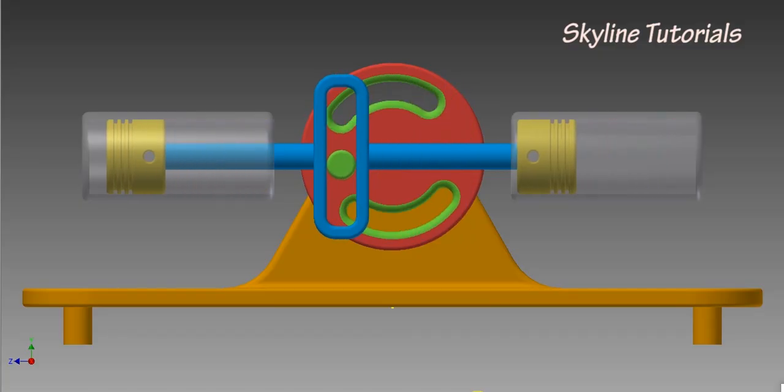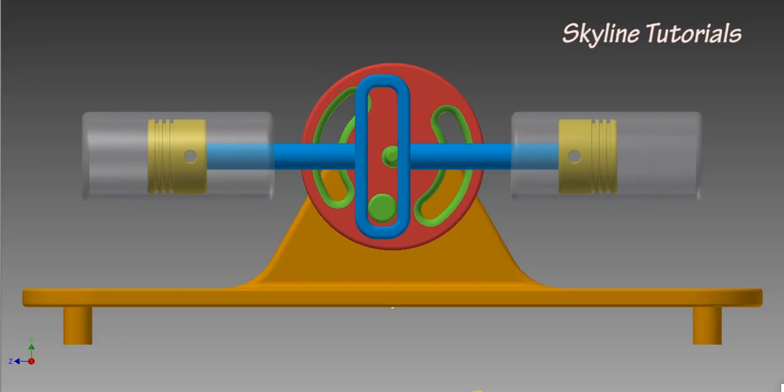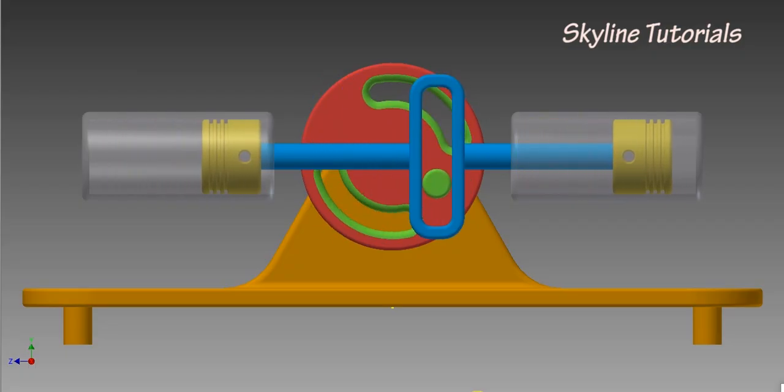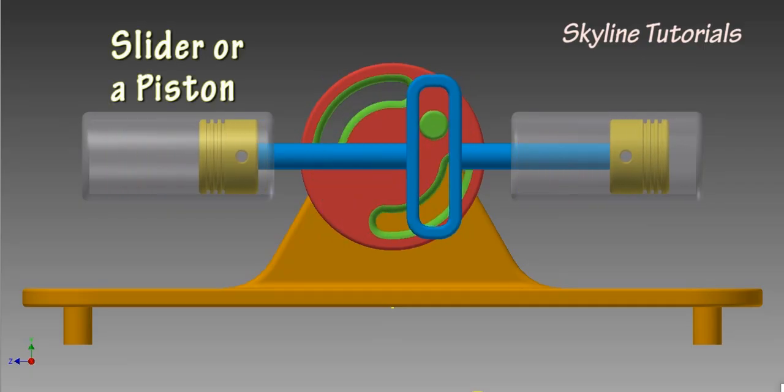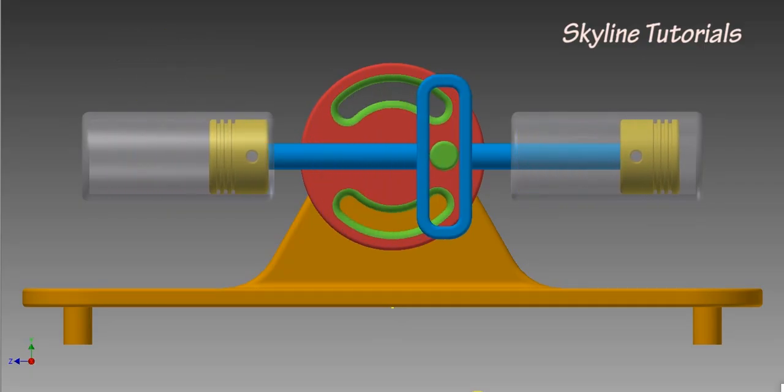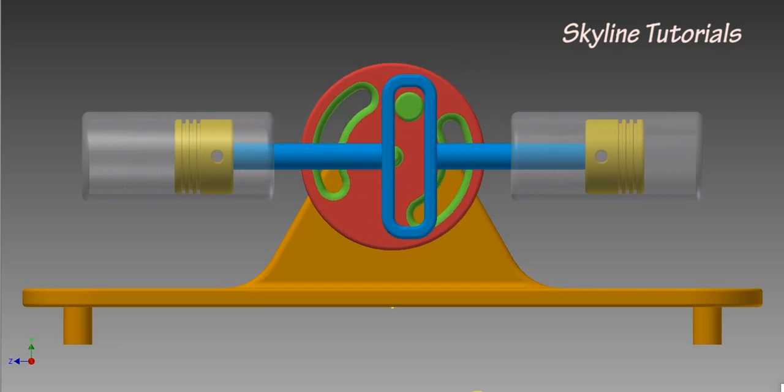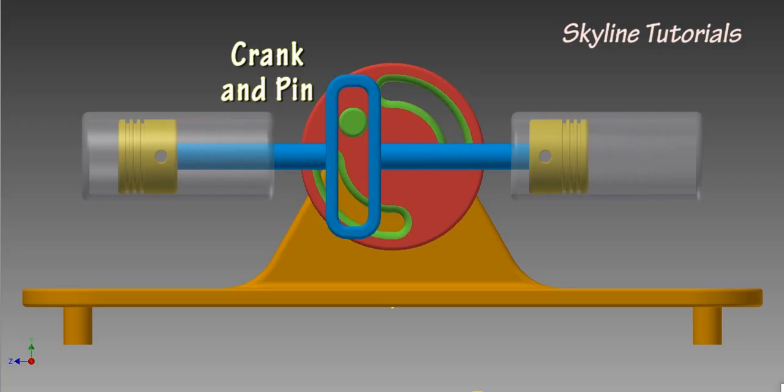It can also be used to convert rotational motion into linear motion. It consists of a slider or piston, a sliding yoke with a slot, and a disc-shaped crank with a pin.